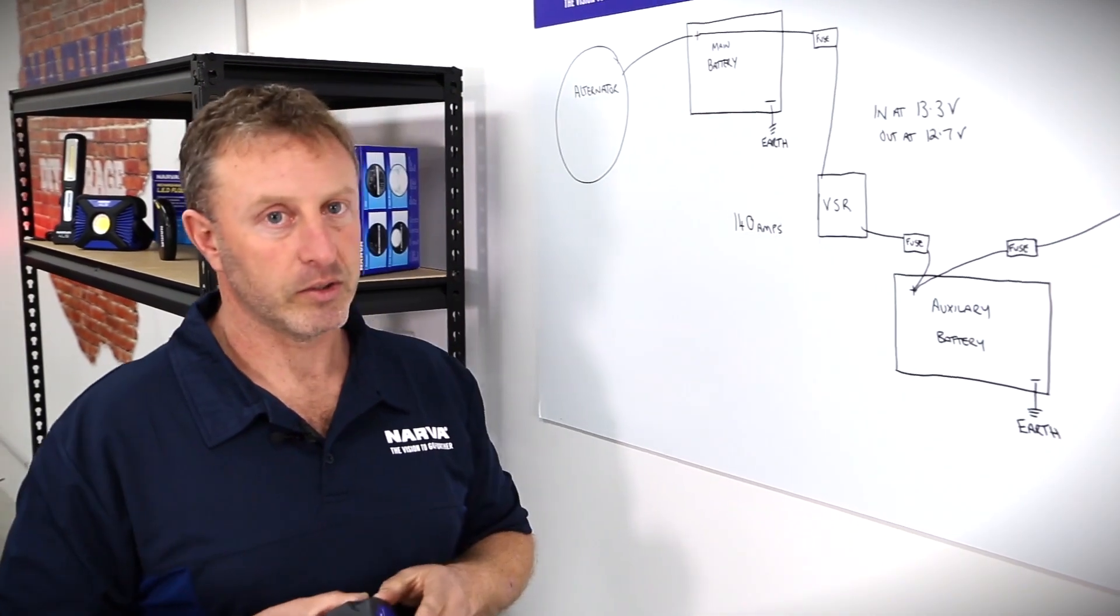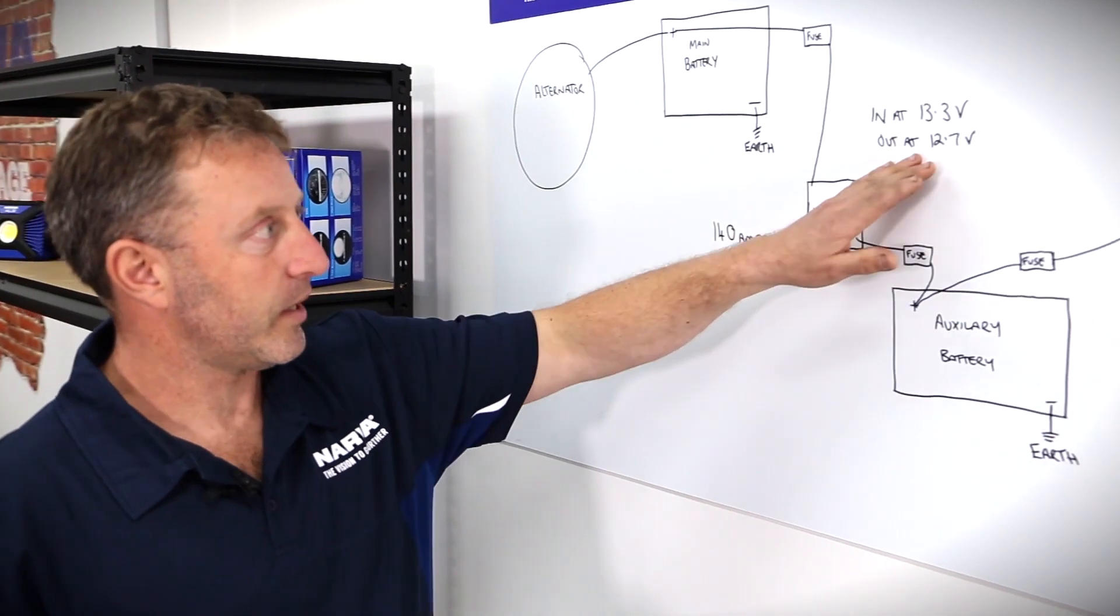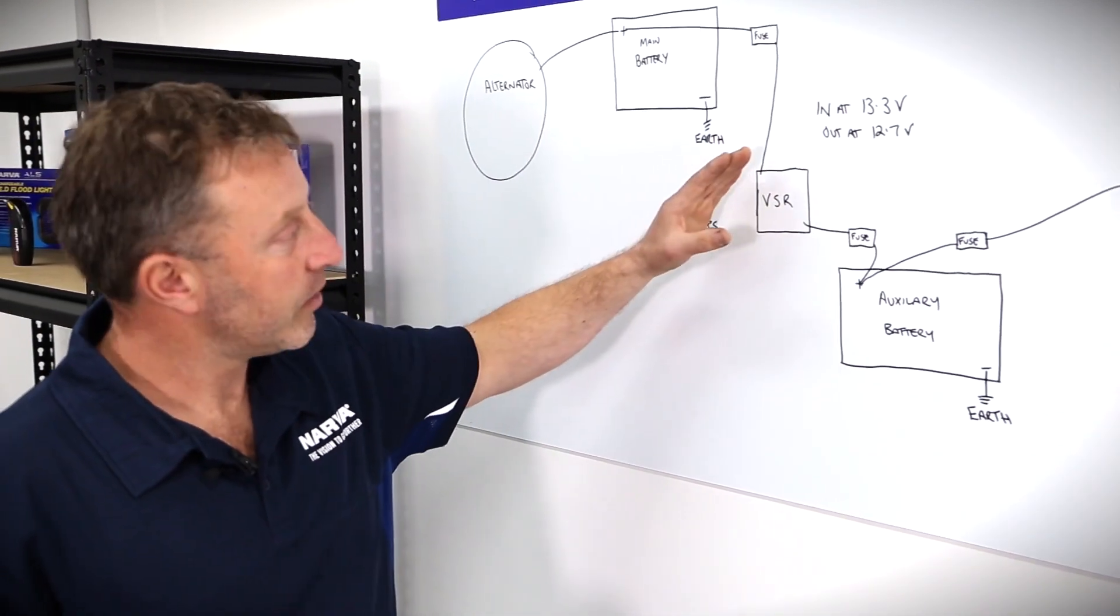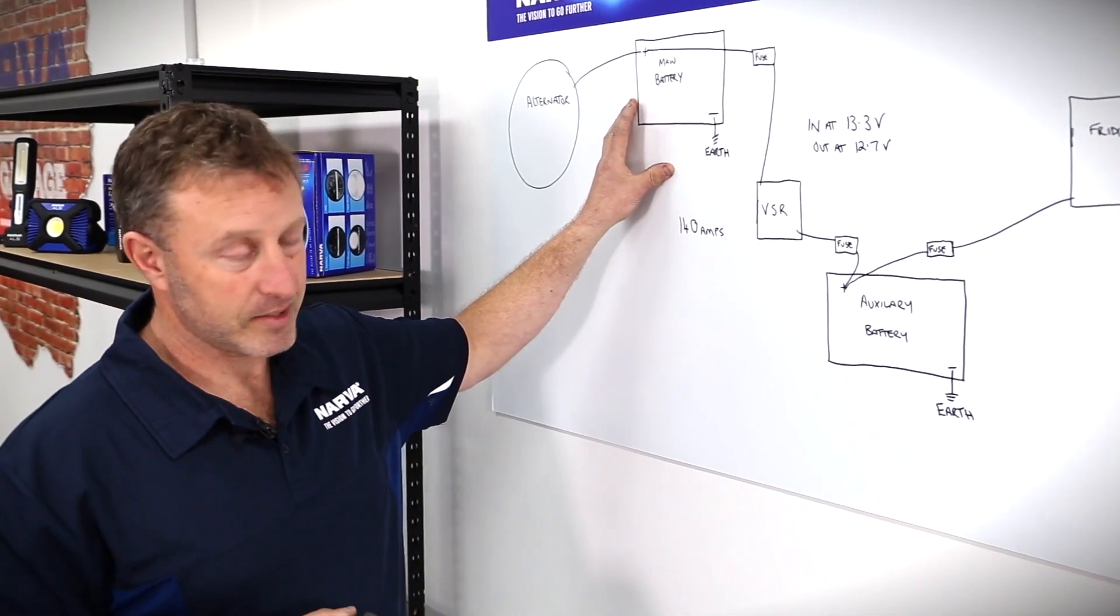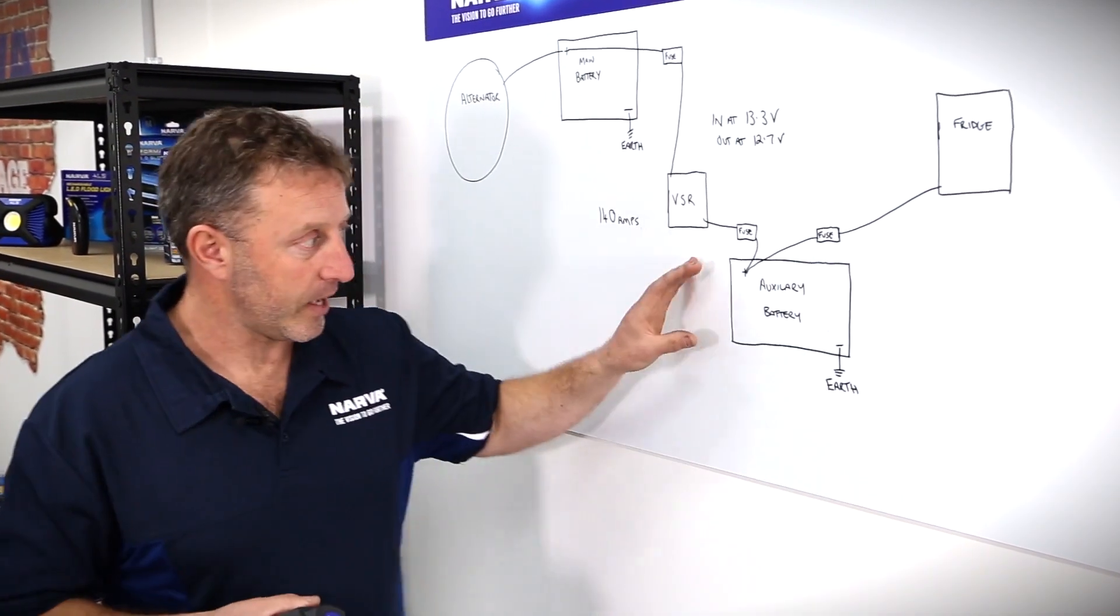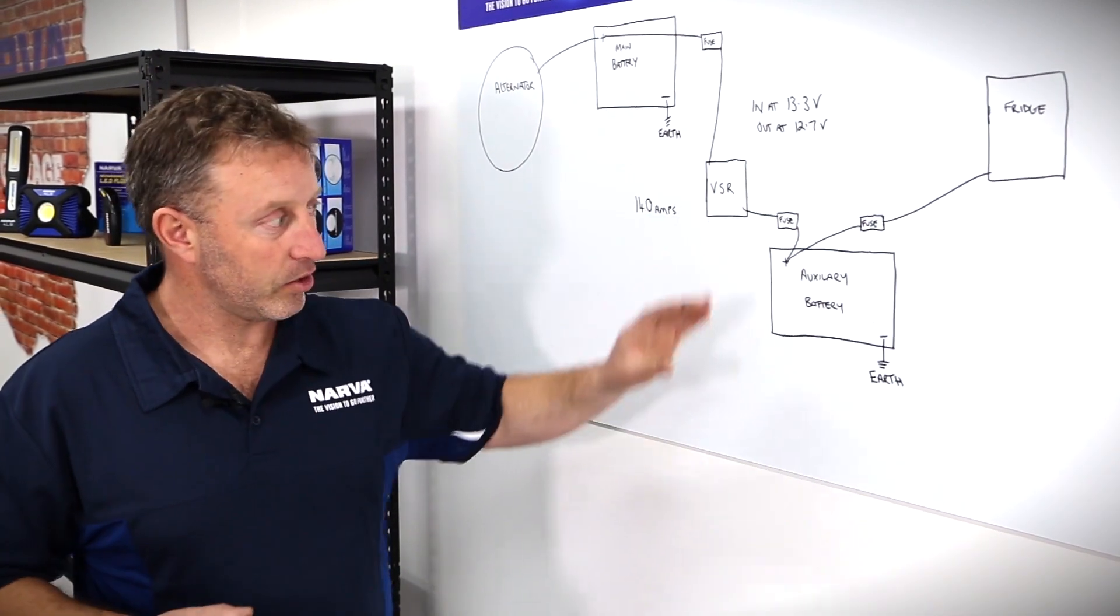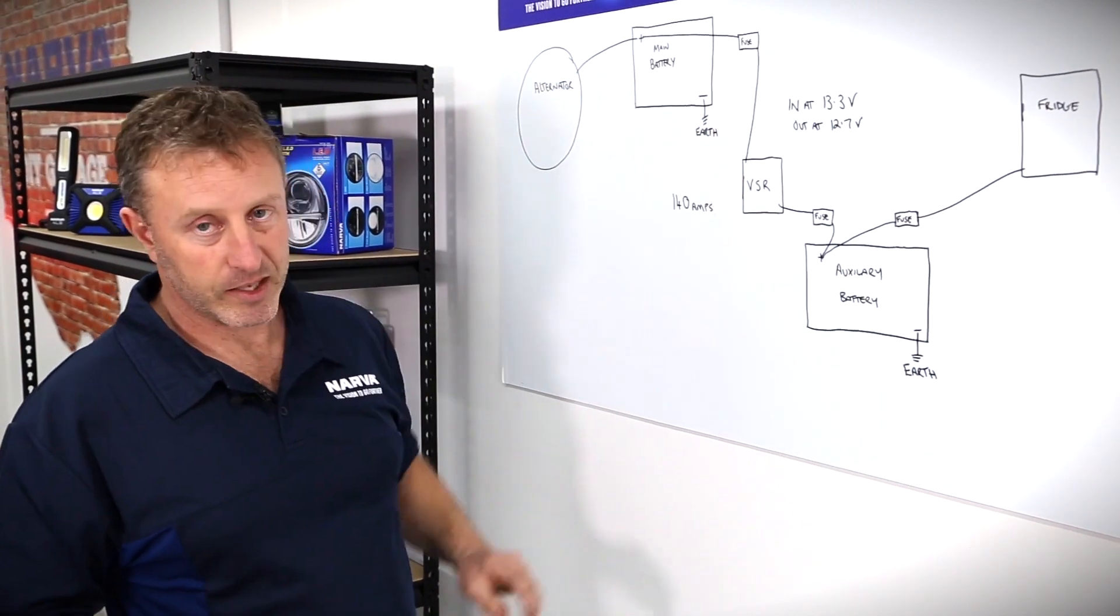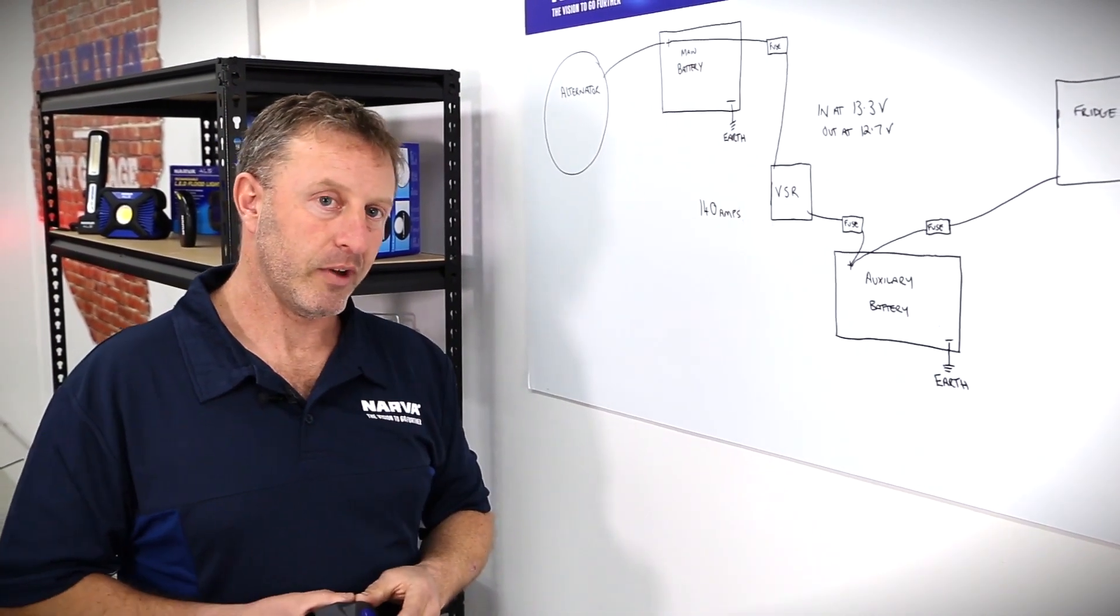When you turn off your vehicle and the voltage settles down, when it gets to 12.7 volts it will cut out and disconnect the auxiliary battery from the main battery. So when you're camping and using your fridge or any other accessories on your auxiliary battery, you can drain this battery completely down, but because it's disconnected from the main battery you'll always be able to start the vehicle and drive home safely.